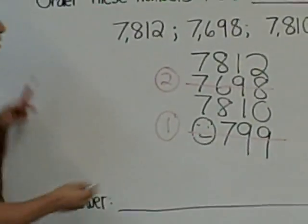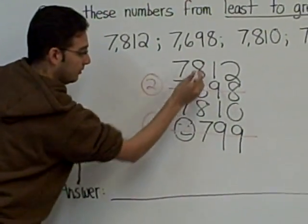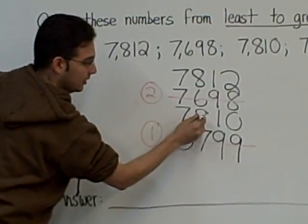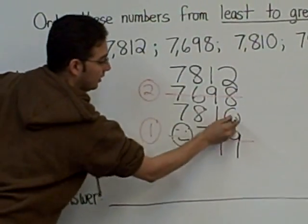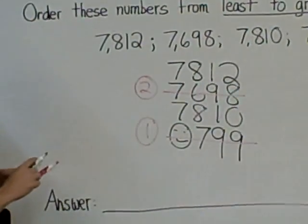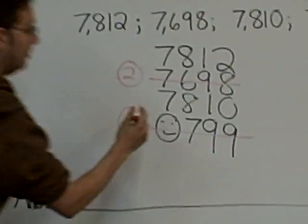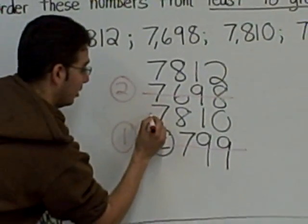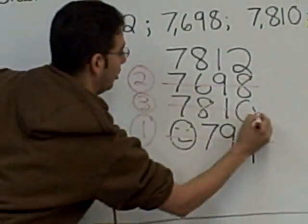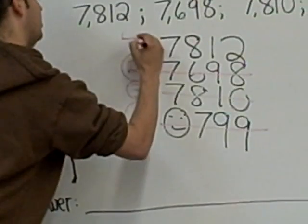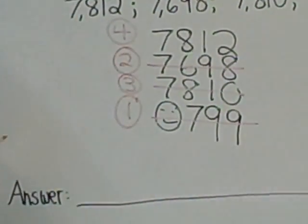Same. Same. Same. Different. Which number is smaller? Zero. So that means that this is the third smallest number. We're going to give that a 3 and cross it out, which means this is the largest number.